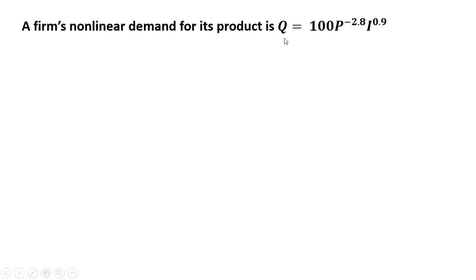A firm's nonlinear demand for its product is given by the following. Q is quantity demanded, P is price, and I represents income per capita.